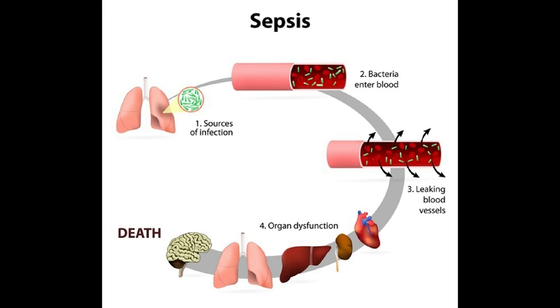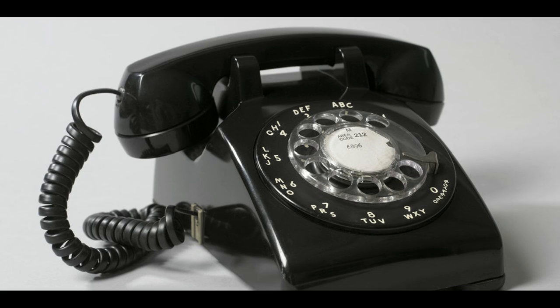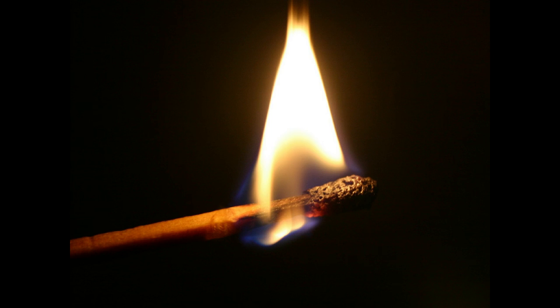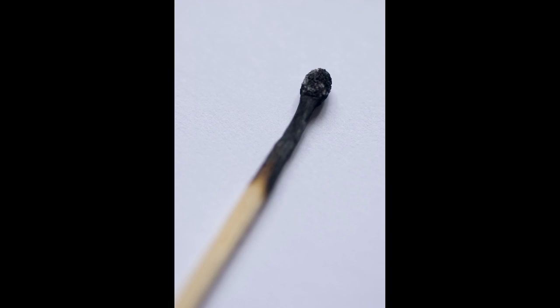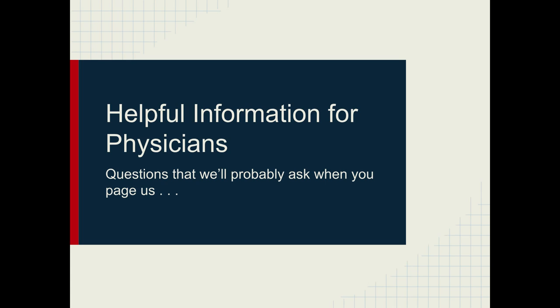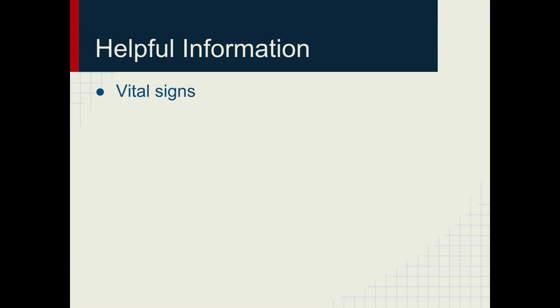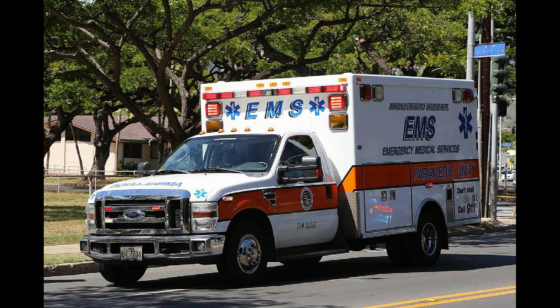Now that you've identified a patient with probable sepsis, you want to call the doctor. Early identification and treatment of sepsis patients is really important. So what kind of information would we like you to have ready? Number one: vital signs. These tell us whether sepsis is likely, and how stable or unstable the patient is. A really sick patient may need to be transferred to the emergency department.